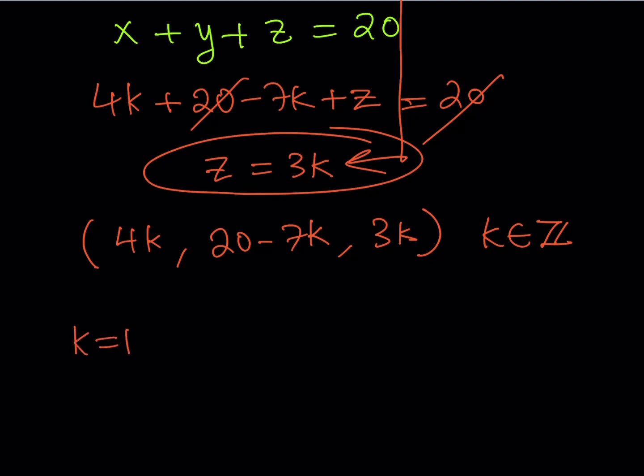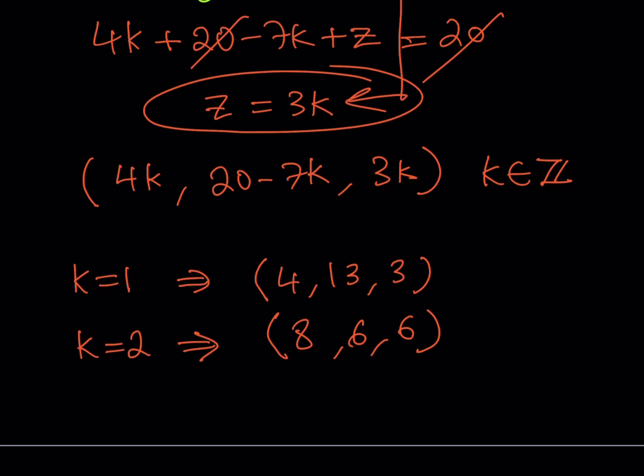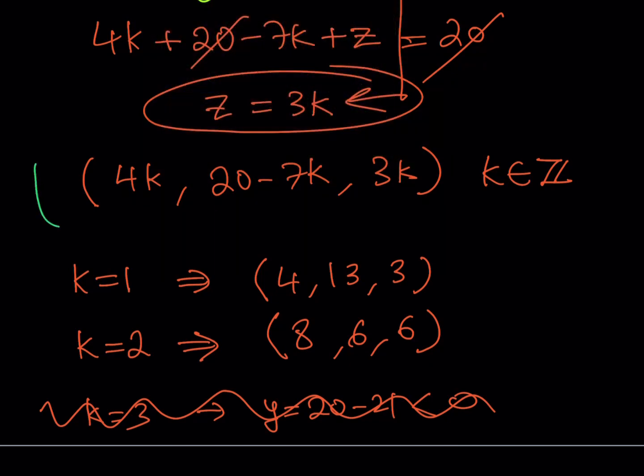If you're looking for positive solutions, you've got to make sure that all your k values make everything positive. For example, k equals 1 is valid: you get 4, 13, 3. That's one of the positive ordered triples. If you use k equals 2, it also works: you get 8, 6, 6. If you replace k with 3, the y value will be 20 minus 21, which is less than 0. You don't want that because you're looking for positive integer solutions. But as I said, this gives you all the solutions. These are specific solutions where we're looking for positives.